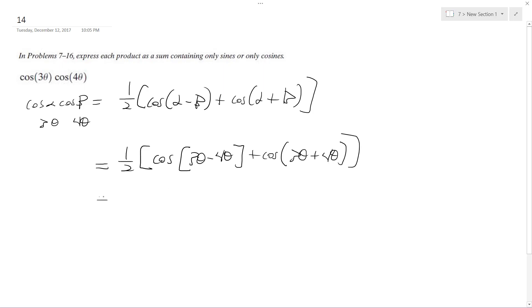And we combine everything, we get 1/2 cosine negative theta, plus cosine 7 theta.